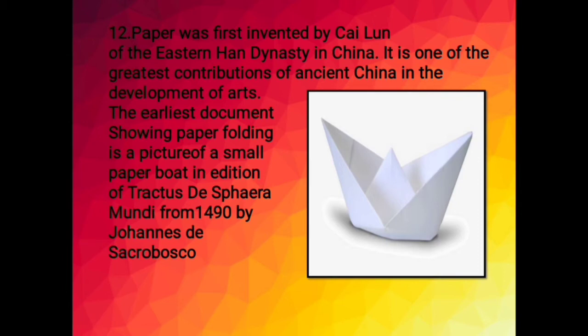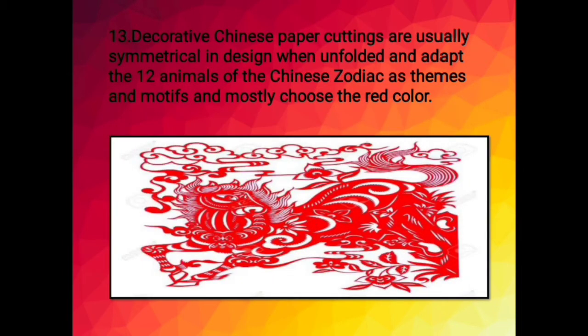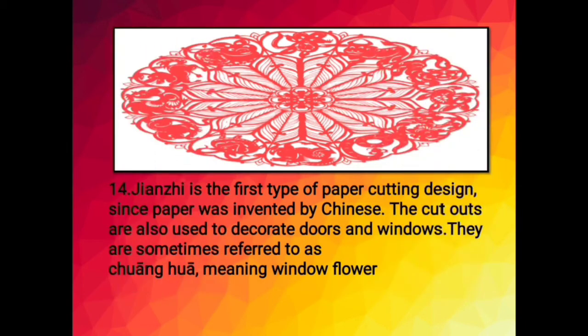Paper was first invented by Cai Lun during the Eastern Han Dynasty in China and is one of the greatest contributions of ancient China to the development of arts. The earliest documentation showing paper folding is a picture of a small paper boat in the 1490 edition of Tractatus de Sphaera Mundi by Johannes de Sacrobosco. Decorative Chinese paper cuttings are usually symmetrical in design, adapt the 12 animals of the Chinese Zodiac as themes, and mostly use the color red. Jianzhi is the first type of paper cutting design. The cutouts are used to decorate doors and windows and are sometimes referred to as Chuanghua, meaning window flower.